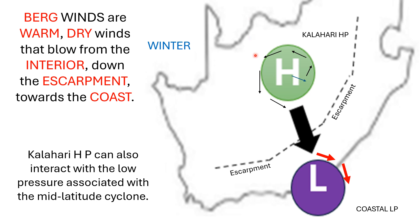So, just in summary: Kalahari High Pressure over the interior of the country, coastal low along the coastline. The wind moves from the interior down the escarpment towards the coastline. Its origin is over the interior which makes it dry, and it is warm by the time it reaches the coast because it moves down the mountain. As an alternative, the Kalahari High Pressure cell could also interact with the low pressure associated with a passing mid-latitude cyclone.